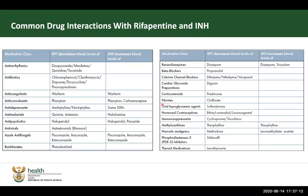We spoke earlier about hormonal contraceptives. You can see rifapentine decreases blood levels of these drugs. That's why we have a recommendation that women who are on hormonal contraception taking rifapentine should also use barrier methods like condoms and IUCDs. Use your medicine formulary regularly when patients have more than one diagnosis, taking more than one group of drugs, to evaluate potential drug interactions and the monitoring and switching that we might have to do.